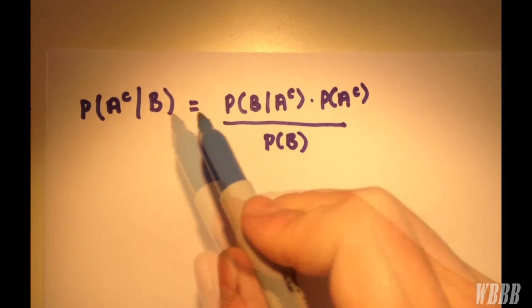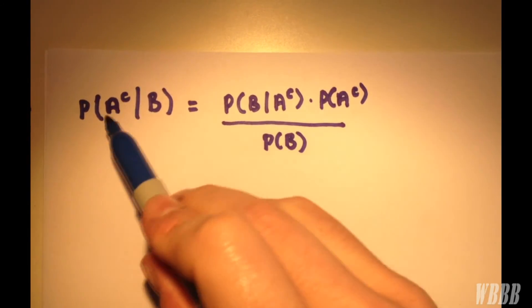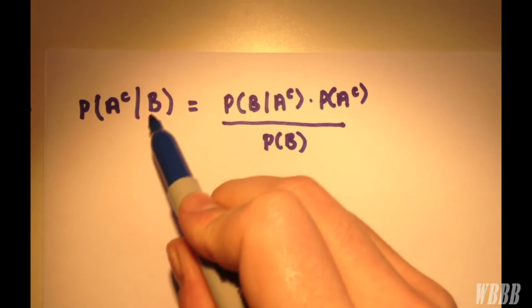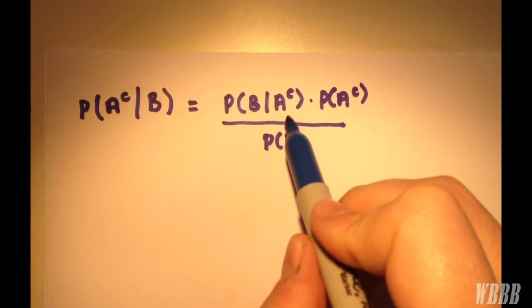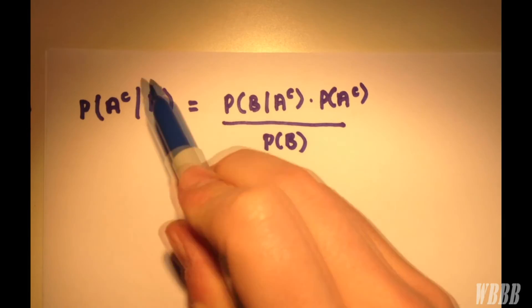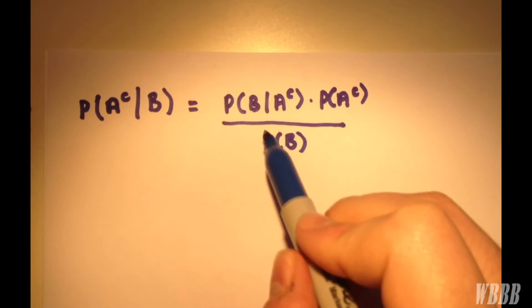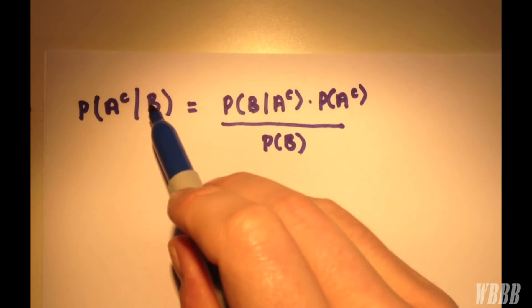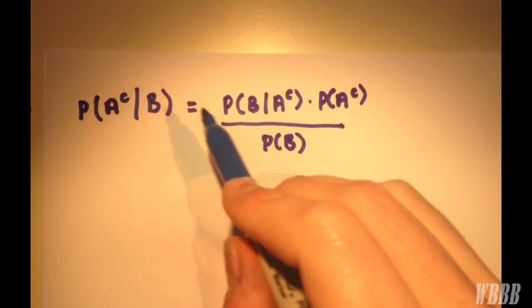If you can think of this, you can remember Bayes' theorem just by thinking A|B, A|B, and reverse this to BA.